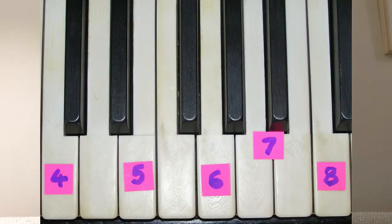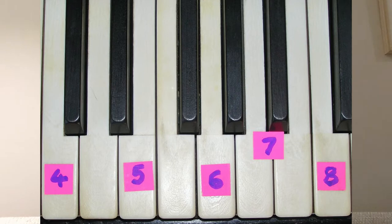Pythagoras said that if you keep going up by a ratio of three over two — like a C, if it was a two, then a G would be a three — and the next C would be twice the original C. But he'd got one wrong: the E, the middle of the chord.